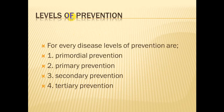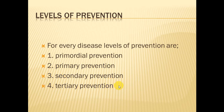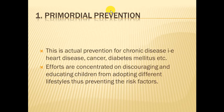In public health, we focus on prevention of the disease. For every disease there are certain levels of prevention. There are four levels of prevention: first, primordial prevention; second, primary prevention; third, secondary prevention; and fourth, tertiary prevention.